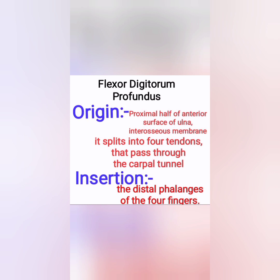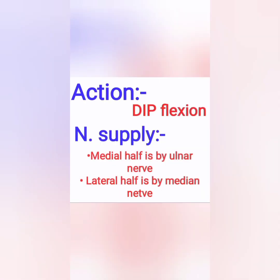Flexor digitorum profundus originates from the ulna and interosseous membrane. It splits into four tendons which pass through the carpal tunnel and insert into the distal phalanges of the fingers. Its action is flexion of the DIP joint and also flexes the MCP joint. Its innervation is dual: the medial half is innervated by the ulnar nerve and the lateral half by the median nerve.